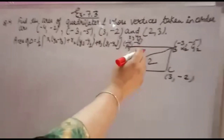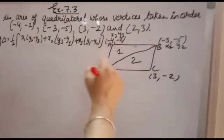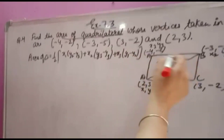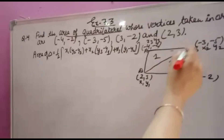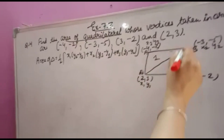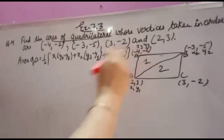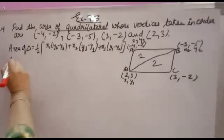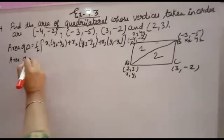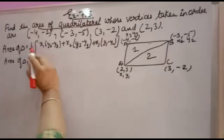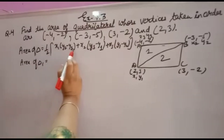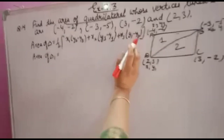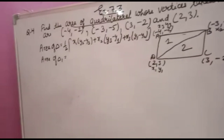To find the area of a quadrilateral, you first find the area of triangle 1, then the area of triangle 2, then add them to get the area of the quadrilateral. For the area of triangle 1, you use this formula: it is half times [x1(y2 - y3) + x2(y3 - y1) + x3(y1 - y2)].